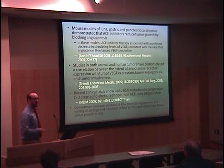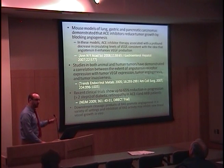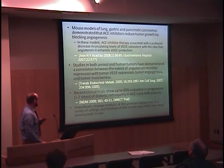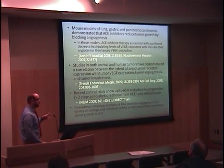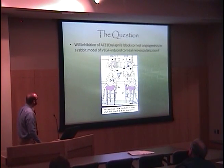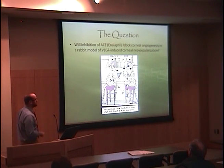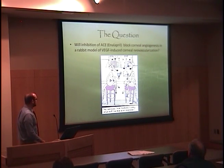So what can we take from all these lines of evidence? The downstream cleavage products of the renin-angiotensin system have been shown to promote angiogenesis in a wide variety of settings, from in vitro models to animal models, and thus inhibition of this cascade may represent a new therapy for trying to block angiogenesis in vivo. And so that's what we decided to look at. Our question was: will inhibition of ACE with enalapril block corneal angiogenesis in a rabbit model of VEGF-induced corneal neovascularization?